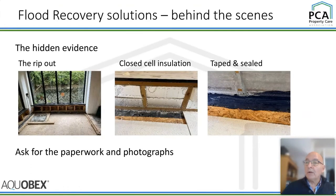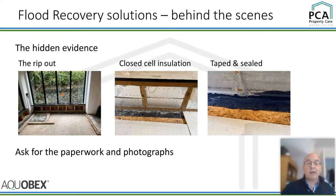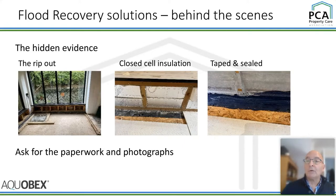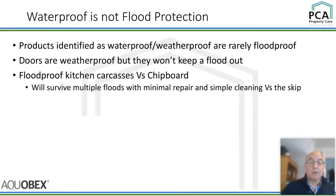Here's an example of a property in Ironbridge that has flooded three times. We've evidenced ripping out the old material in the conservatory, putting closed-cell insulation back into the cavity — which is a really good flood protection measure as well as insulation — and evidencing that the joints have been taped and sealed. This record will form part of the deeds when this person moves on from the property.